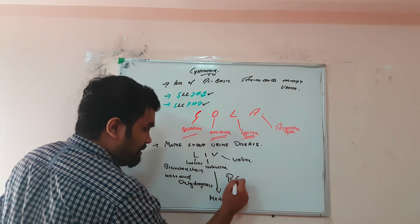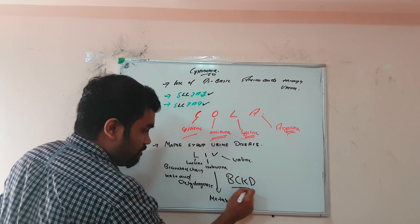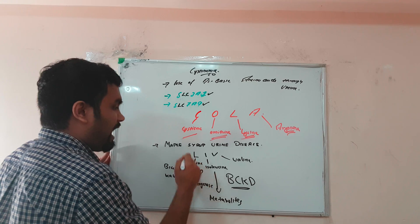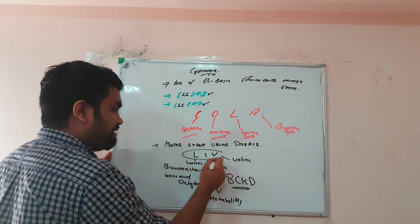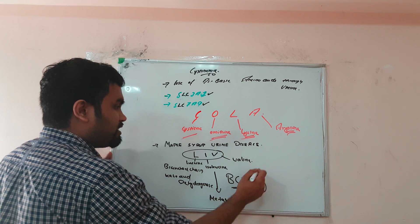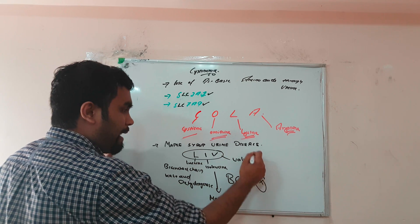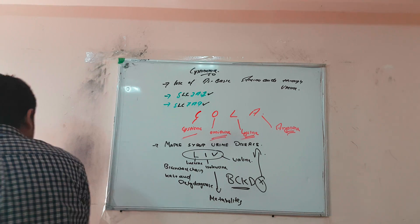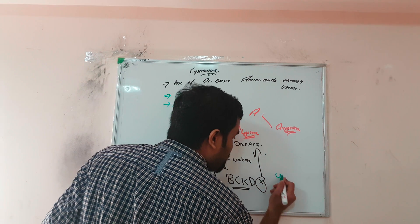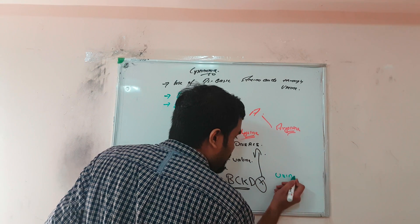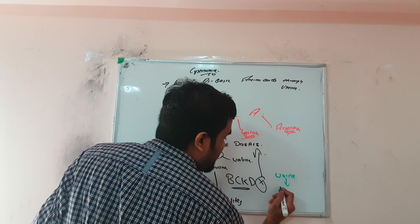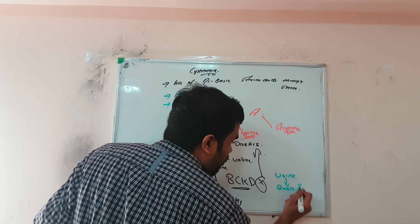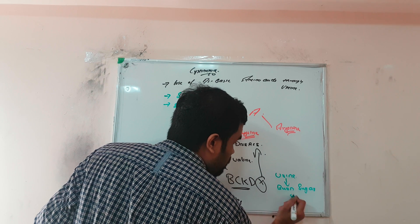If the BCKD enzyme is absent, leucine, isoleucine, and valine accumulate — and this causes maple syrup urine disease. The typical symptom is that the urine smells like maple syrup, which is a burnt sugar odor.